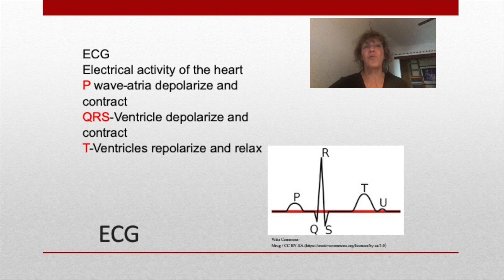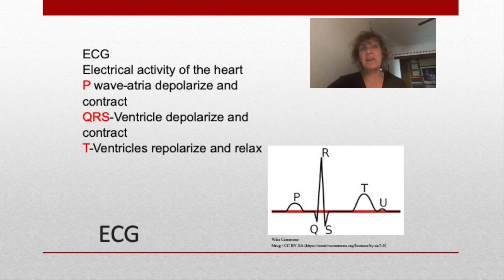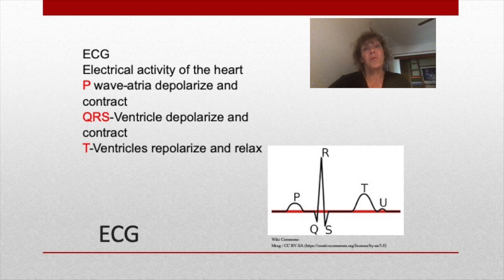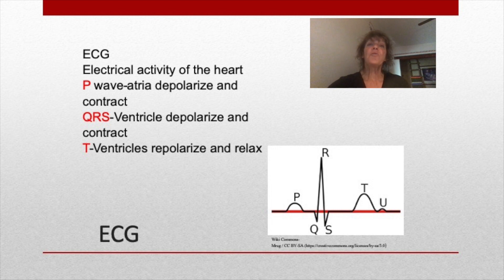When these wave patterns change or there's a change in timing, it can indicate certain diseases or disorders. The P wave represents atrial depolarization — the sodium gates open, sodium rushes into the cell, creating a positive charge, and the atria contract. The QRS complex represents ventricular depolarization and the ventricles contract; atrial repolarization also occurs at this time but is not visible on the EKG. Lastly, the T wave represents repolarization of the ventricles, when the ventricles relax.